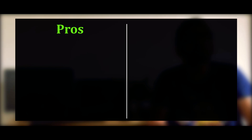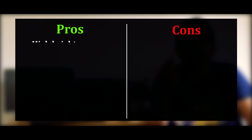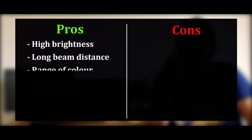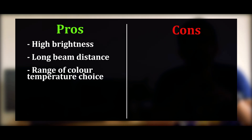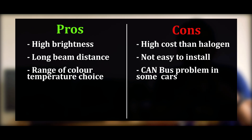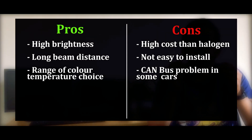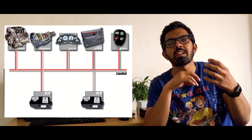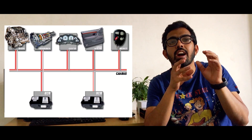The advantages of HID are higher brightness, longer lighting distance and more color choices. However, they have a higher cost than halogens, are not very easy to install and they might cause CAN bus problems in some cars. CAN bus is nothing but a high-speed network inside the car that requires high quality wiring. When you install an HID, poor wiring or a bad terminal connection can create a CAN bus problem.